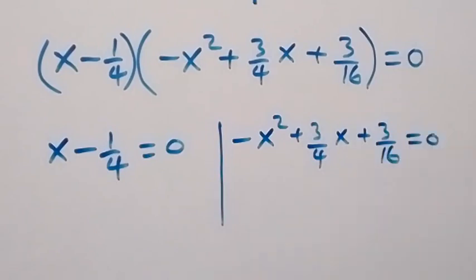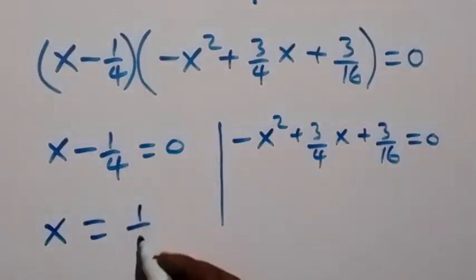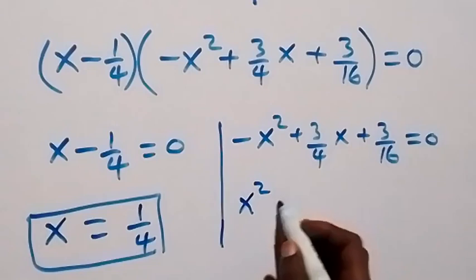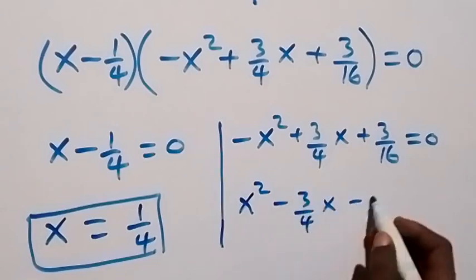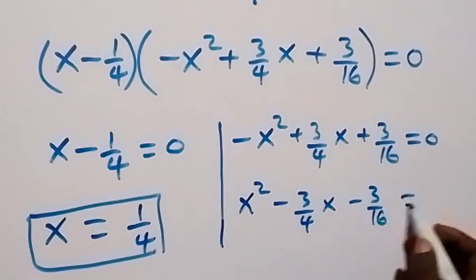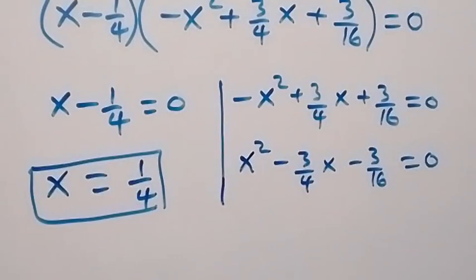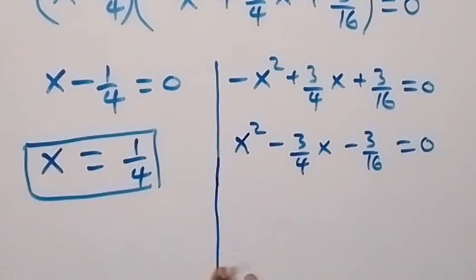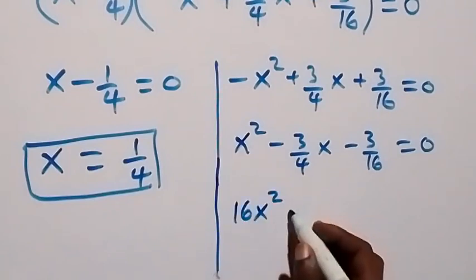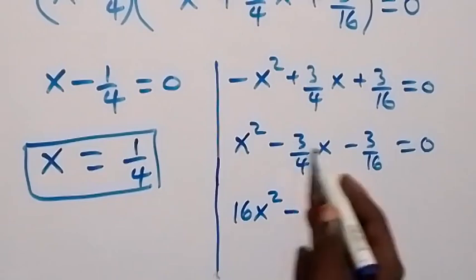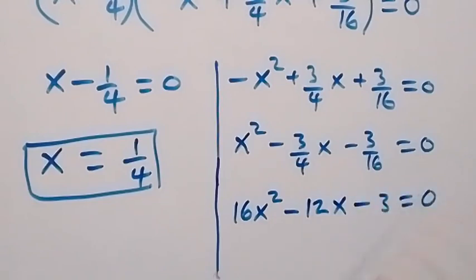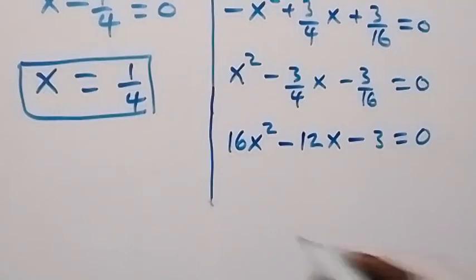On the first case, when we solve this we have x equals to 1 over 4, so we have one real solution. For the second case, we can write x squared minus 3 over 4 x minus 3 over 16 equals to zero. We can clear this fraction by multiplying through by 16, so this becomes 16x squared minus 12x minus 3 equals to zero.